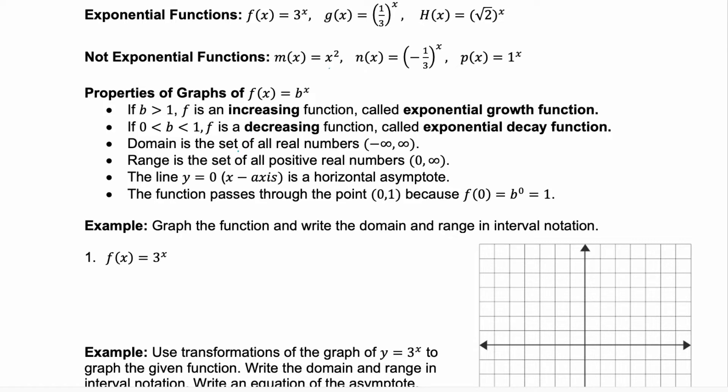The domain for an exponential function is all real numbers, and the range is the set of all positive real numbers. The line y = 0, or your x-axis, is going to be your horizontal asymptote, and your function will pass through the point (0,1) because any base to the power of 0 is equal to 1.